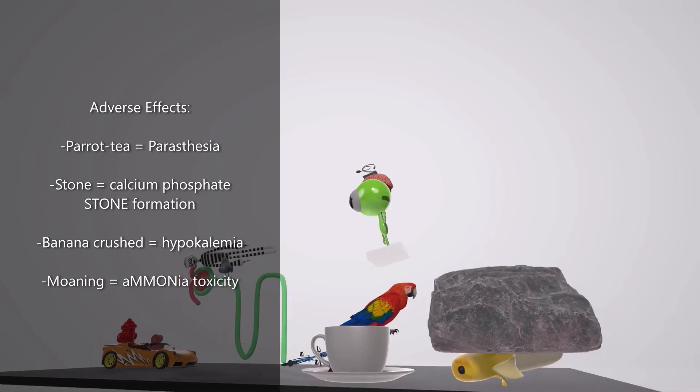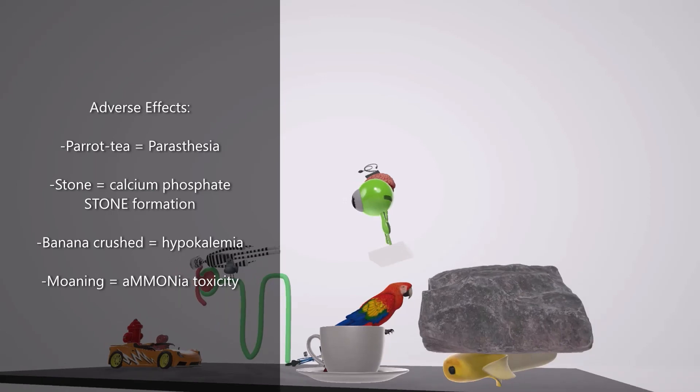We also note this big stone that's crushing the banana. This stone reminds us that carbonic anhydrase inhibitors promote calcium phosphate stone formation. The banana being crushed reminds us of hypokalemia. Bananas in our videos represent potassium, and the fact it's being crushed reminds us of hypokalemia.